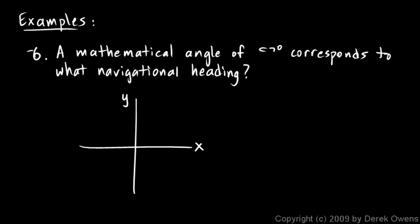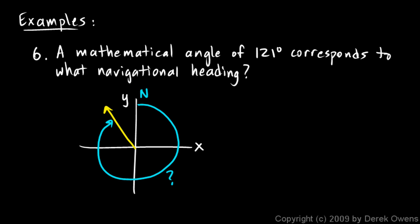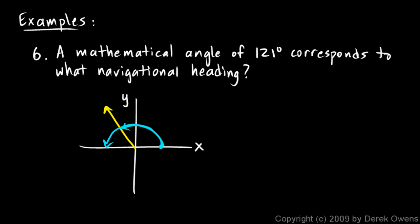Example six is going to be a mathematical angle of 121 degrees — that's 121 degrees from the positive x-axis. That corresponds to what navigational heading? If north is this way, and we specify our navigational headings as an amount of rotation clockwise from north, that's the angle we're looking for. It's going to help to find this little reference angle. That's 121 degrees, and if I rotated all the way around to there that would be 180 — a half circle. So this little reference angle is going to be 180 minus 121, which is 59 degrees.